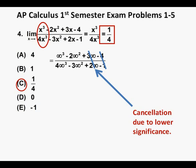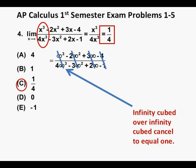And compared to the infinities cubed, the infinities squared are insignificant, so we cross them off as well. And finally, infinity cubed over infinity cubed cancel to equal 1, so we're left with 1 over 4, 1 fourth.